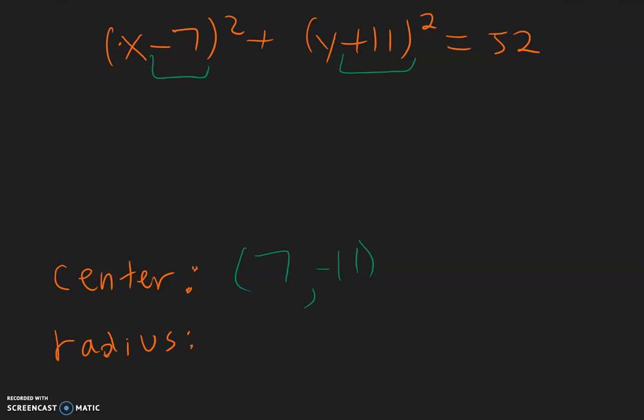Now for the radius, square root of 52 is not going to be a whole number. So we could write it underneath the square root sign and see if we can simplify that. Square root of 52 is the same as 2 times 26. 2 we cannot break it up any further. 26 is 2 times 13.